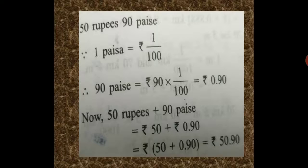Next, 50 rupees 90 paisa. 1 paisa is equal to rupees 1 upon 100. Therefore, 90 paisa is equal to rupees 90 into 1 upon 100, that means rupees 0.90. Now, 50 rupees plus 90 paisa is equal to rupees 50 plus rupees 0.90, which is equal to rupees 50.90.